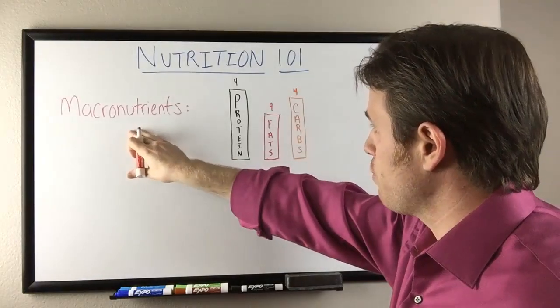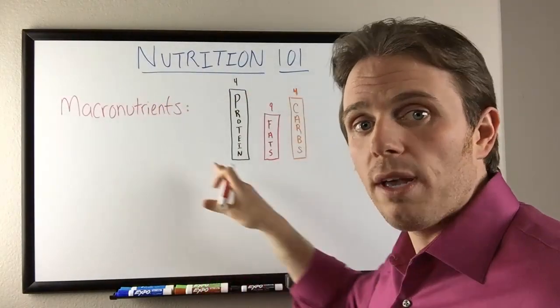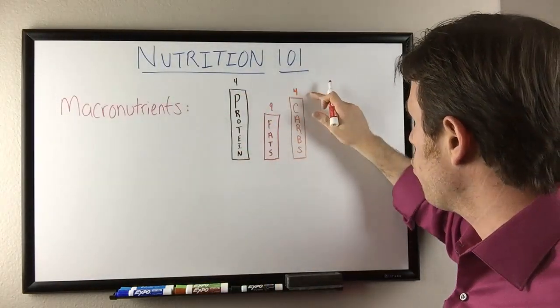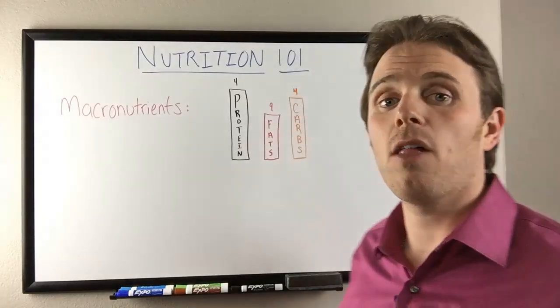So again, let's look at macronutrients. We have three. We have protein, we have fat, and we have carbohydrate. You can see we have four calories in protein, four calories in carbs, nine calories in fat.